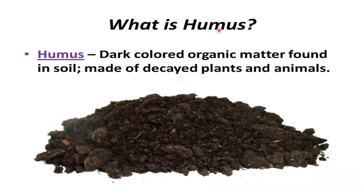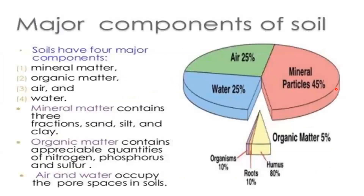What is humus? Humus is the dark-coloured organic matter found in soil. It is made of decayed plants and animals. The major components of soil are: mineral matter, organic matter, air and water.